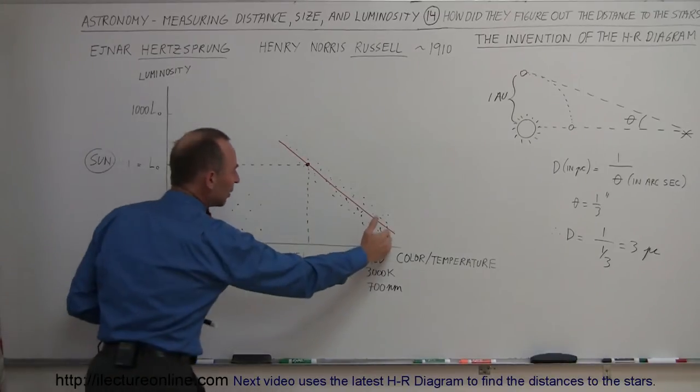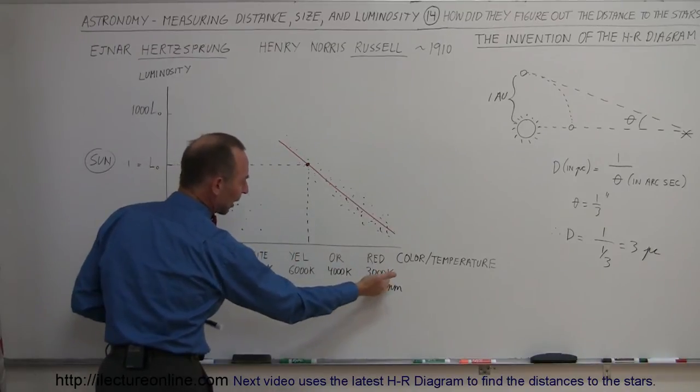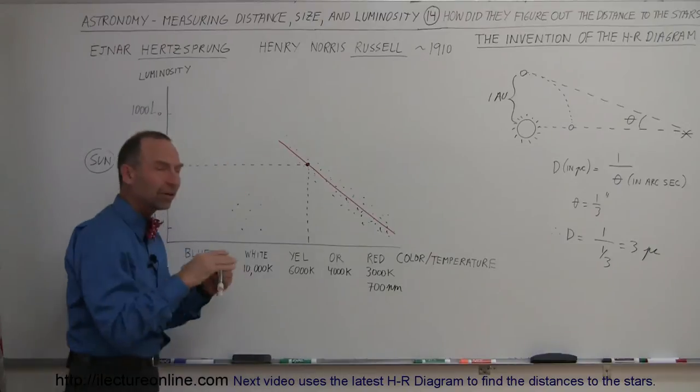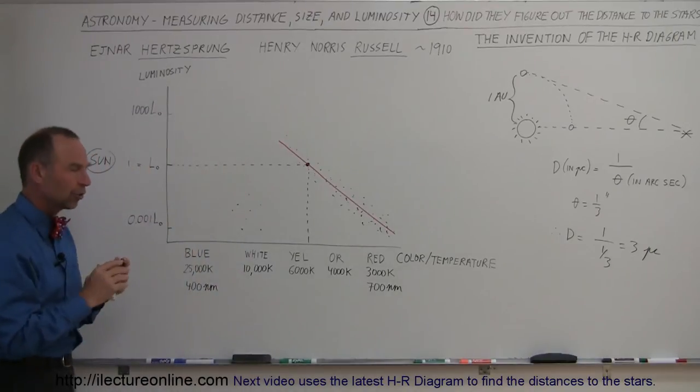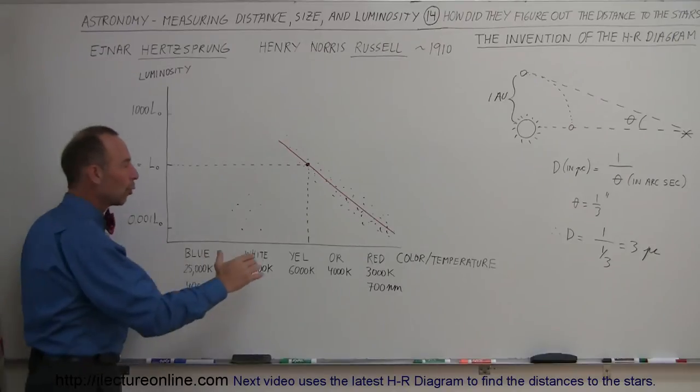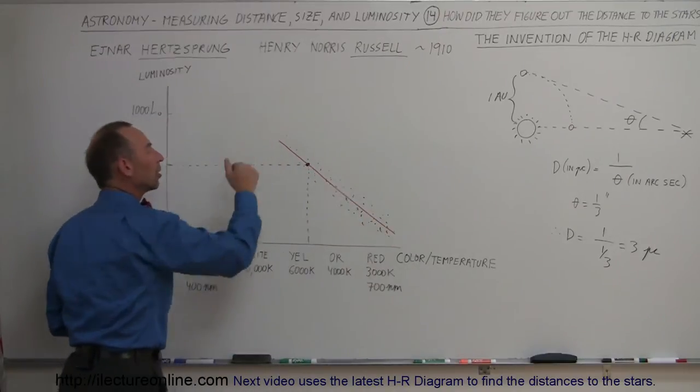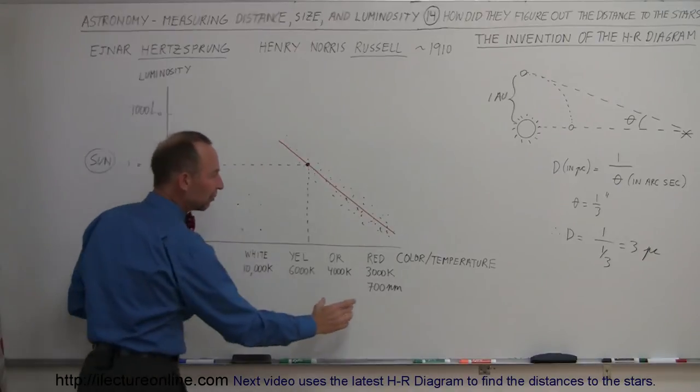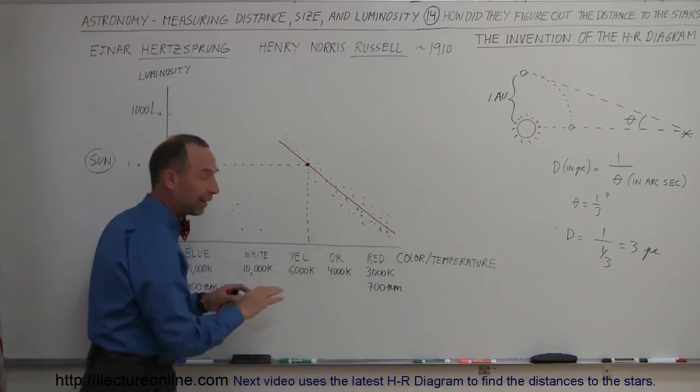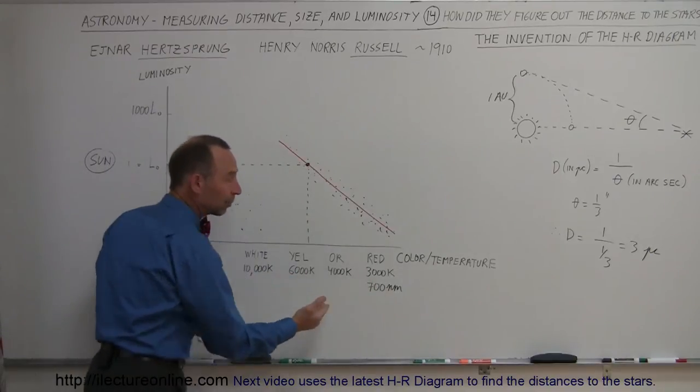But this increase from red to orange to yellow, notice that it goes from 3,000 to 4,000 to 6,000 degrees Kelvin on the surface of the star. Notice that that alone would not account for the large amount of increase in the luminosity. Remember that if you go from a red star to a yellow star, and if the size of the star stays the same, this star should only be 16 times as bright as this one.